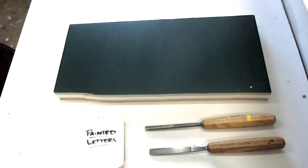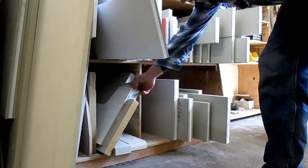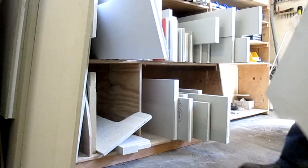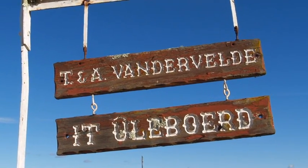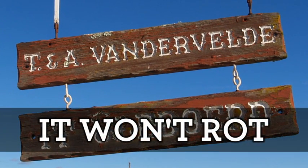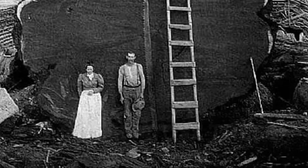Now we use a material called high density urethane, or HDU for short. I'll go into more detail about that another time, but it's basically a waterproof, insect proof substitute for wood.